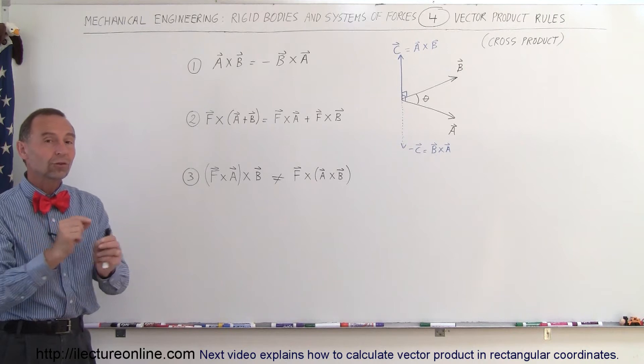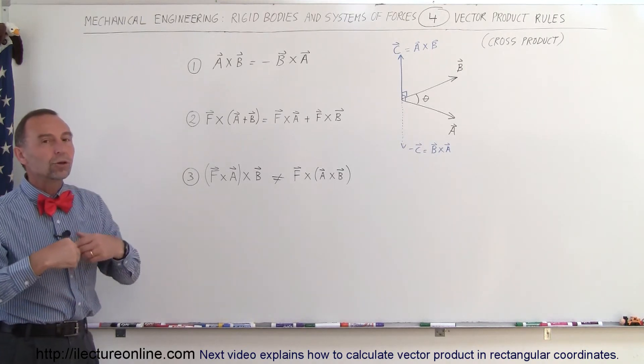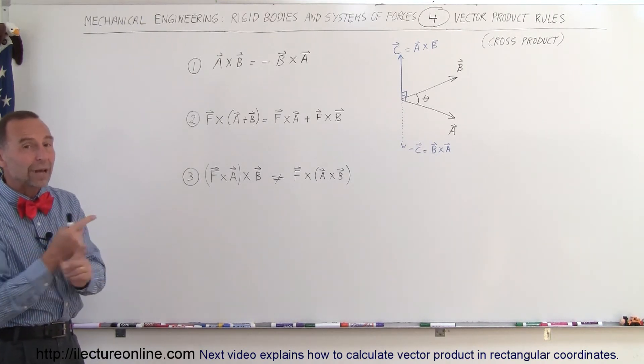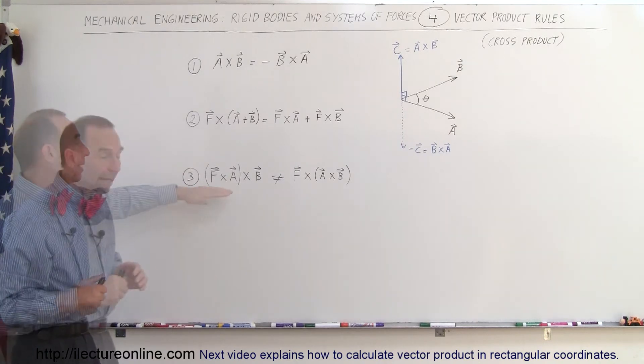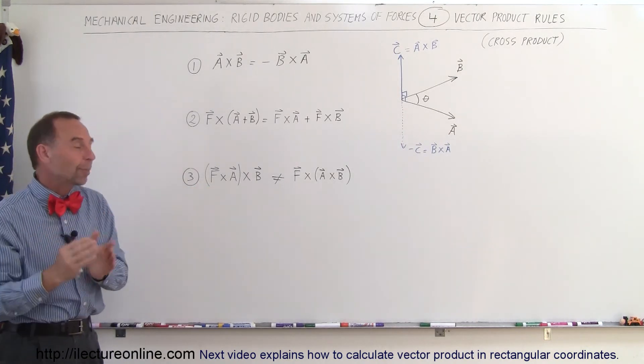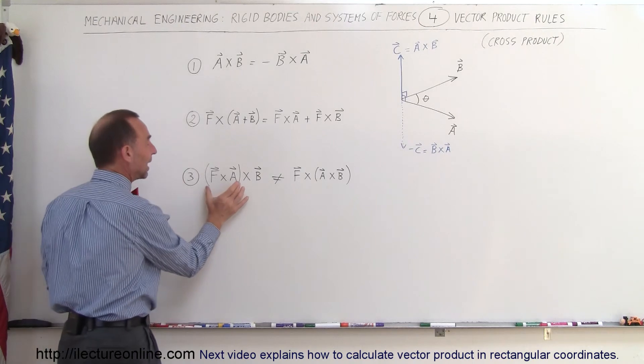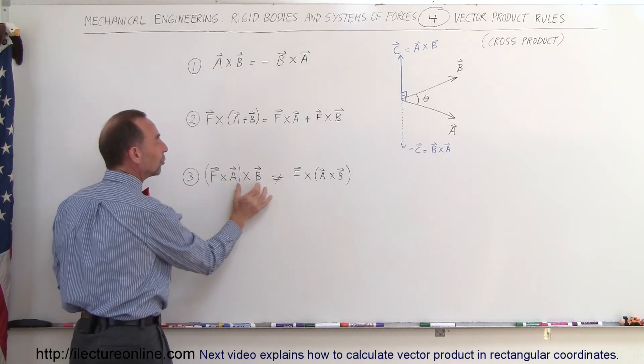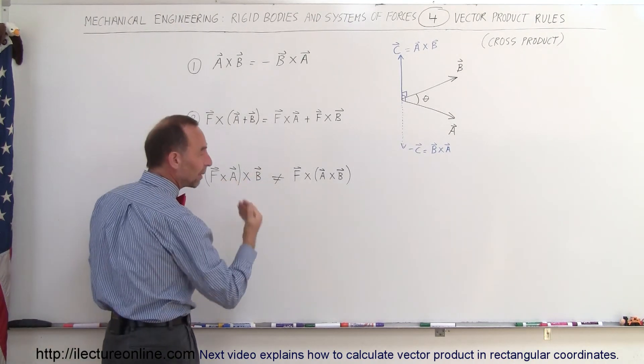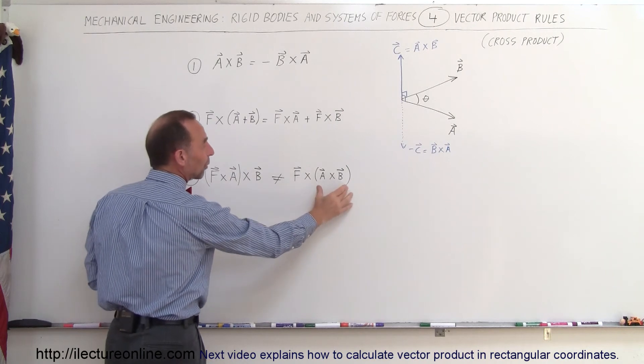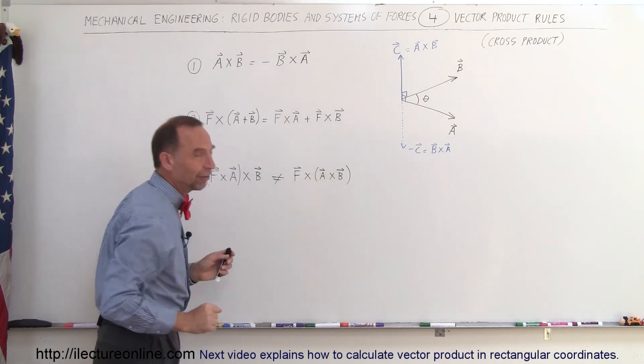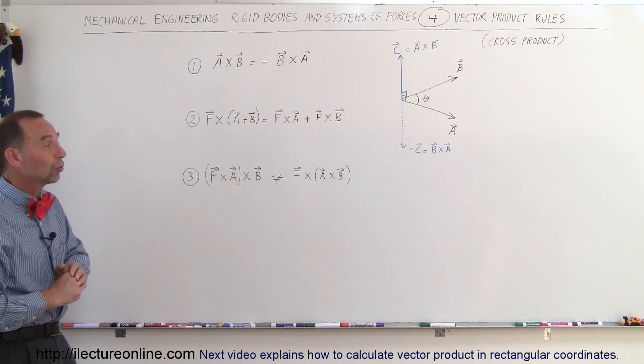Also, you do not want to rearrange, so you don't want to do the commutative property, where you can rearrange the cross products, and you do not want to use the associative property. You don't want to take F cross A first, and then do cross B, and expect the same result as if you do A cross B first, and then you do a cross F. So it does not work that way, so be very careful about those rules.